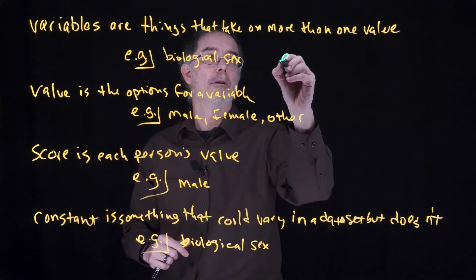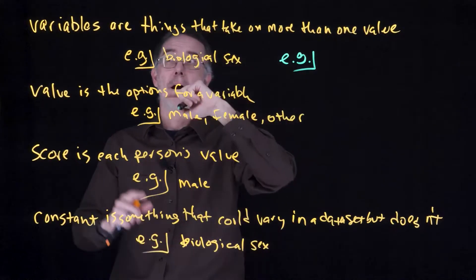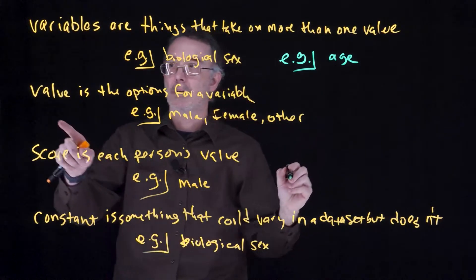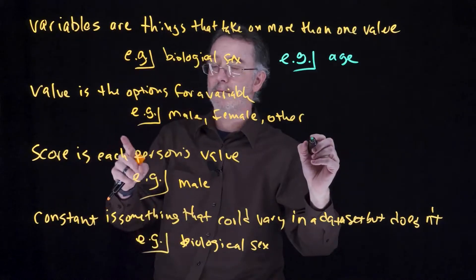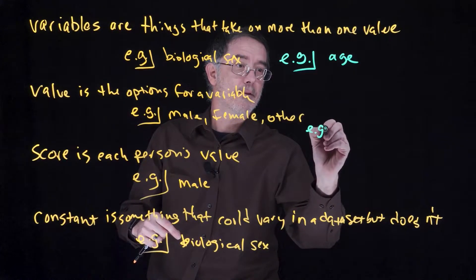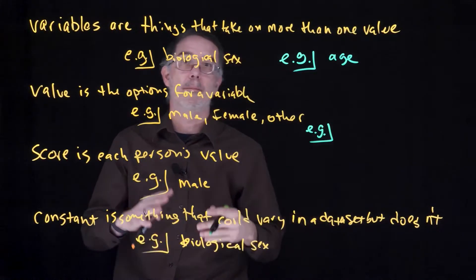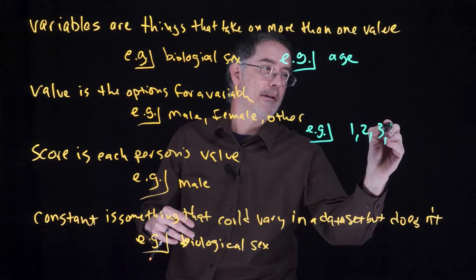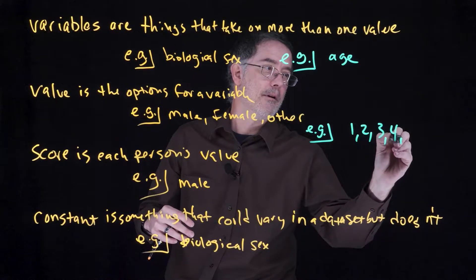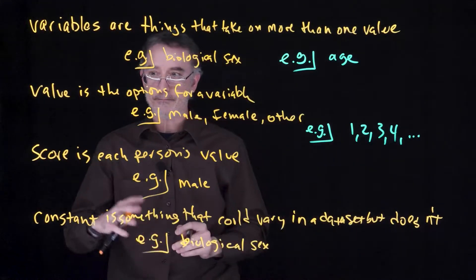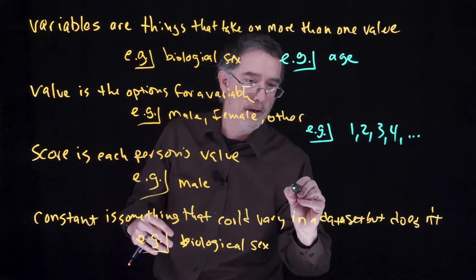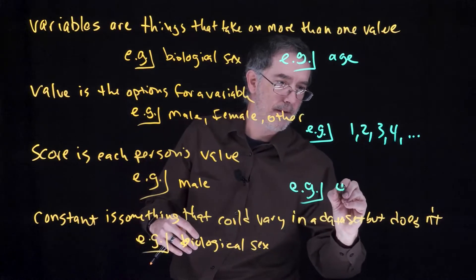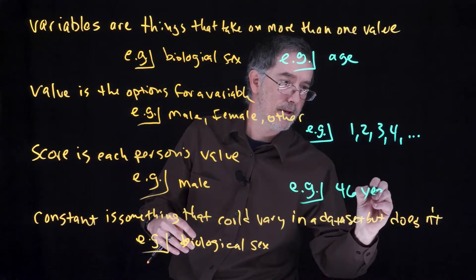Another example of a variable would be age. The values for that, if you just ask people how many years old they are, then you get 1, 2, 3, 4, and so on. If you asked me, I would be 46 years old at this point in time.